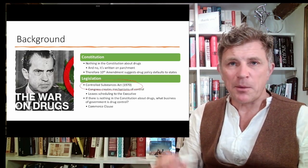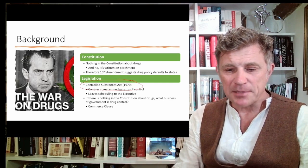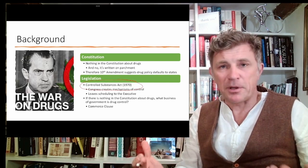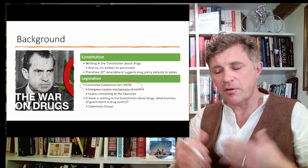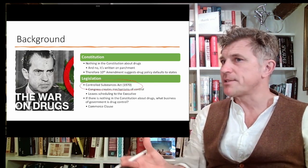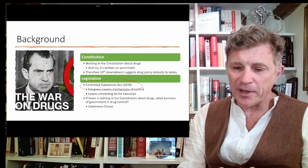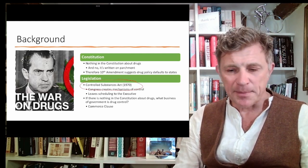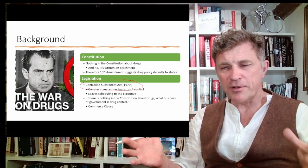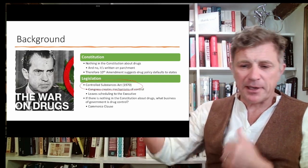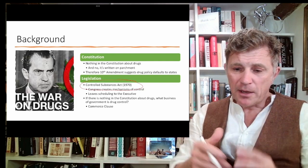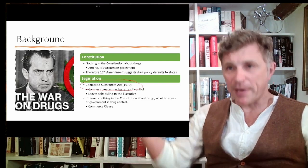What that means is the 10th Amendment — where the Constitution is silent, the states may speak. That should in general theory be the domain of the state: are you going to smoke drugs in this state or not? But the federal government, for reasons long and complicated, decided to pass the Controlled Substances Act in 1970 — that huge overreaching legislation whereby Congress created the mechanism of control but then interestingly gave the president the right to control the scheduling through executive orders.